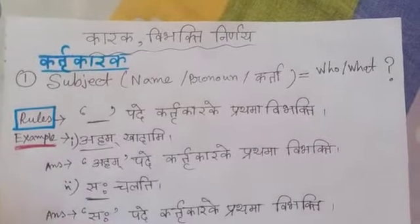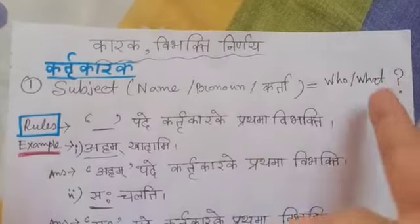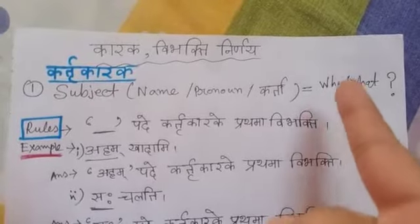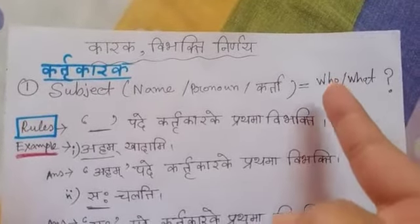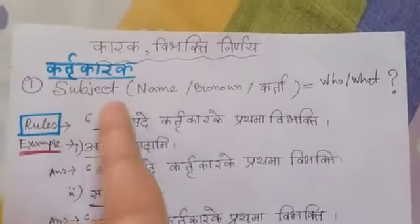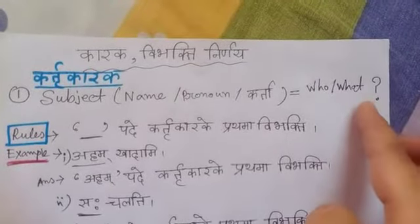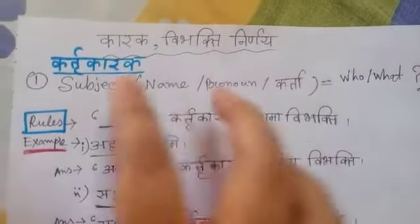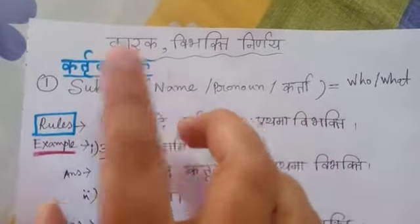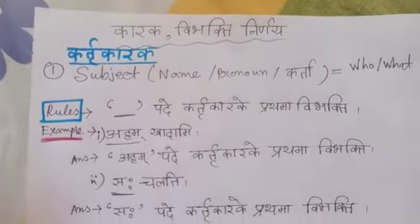For example: 'Ramah gachati' — who is going? Definitely the answer is Ram, so Ram is karta karak. 'Patram patati' — what is falling down? Answer: patram. So when you ask 'who' or 'what' and get the answer, that answer is called subject — karta karak.